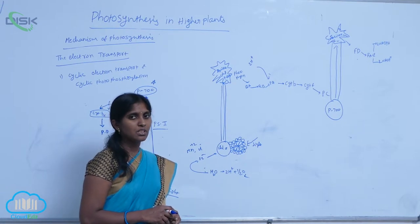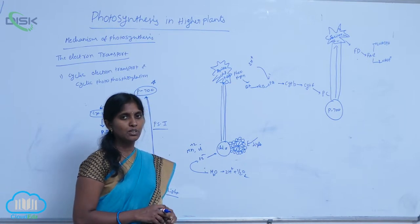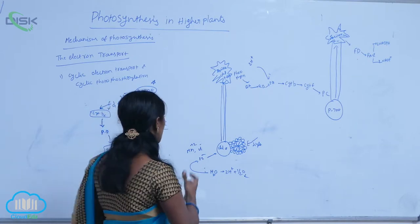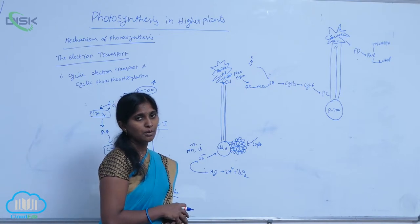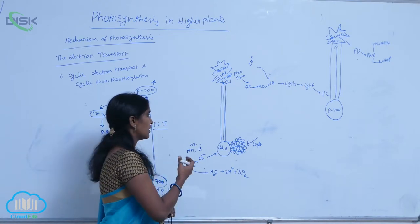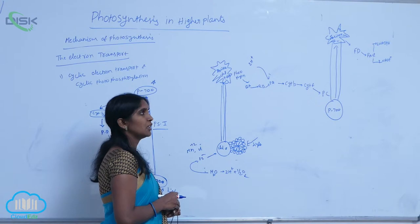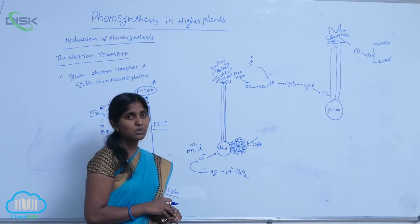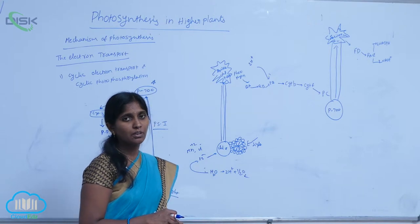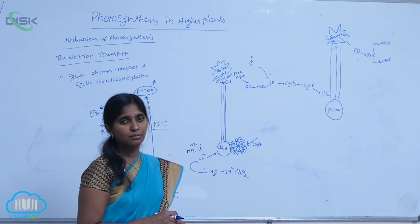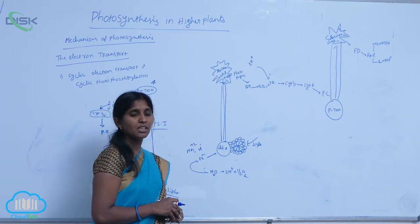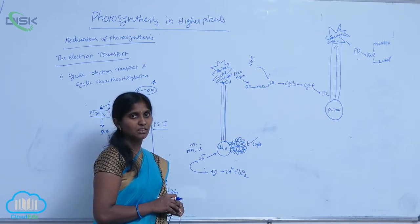At the first stage of non-cyclic photophosphorylation, the electrons are absorbed by the reaction center of P680. Above P680, the wavelength of light is absorbed by PS2. Then, we say it is the excited P680 center.